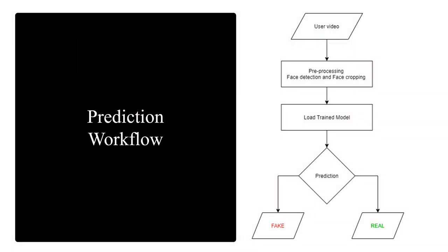In the prediction flow diagram, the first phase is user video upload — the user uploads a video to check whether it is fake or real. Once uploaded, it transfers to the pre-processing unit: first the video is split into frames, then the face is detected and cropped from each frame. The pre-processed video is then passed to the loaded pre-trained model, which processes the video on the learned parameters from training and gives the output — whether it is fake or real.